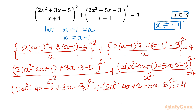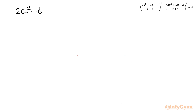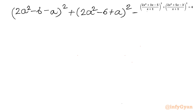Now simplifying: the first bracket gives 2a² - 4a + 2 + 3a - 8 = 2a² - a - 6. The second bracket gives 2a² - 4a + 2 + 5a - 8 = 2a² + a - 6. So we have (2a² - a - 6)² + (2a² + a - 6)² all over a², equal to 4a²... bringing a² to the right-hand side gives 4a².